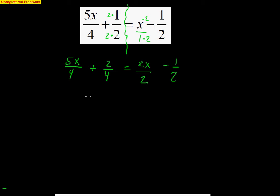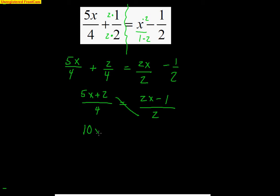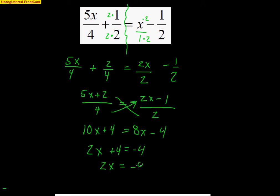Adding the fractions with common denominators gives 5x plus 2 all over 4 on one side, and 2x minus 1 all over 2 on the other. Remember, when you add fractions with common denominators, the denominator stays the same — you don't add the 4s together. Now I cross-multiply: 2 times (5x plus 2) gives 10x plus 4, and 4 times (2x minus 1) gives 8x minus 4. Subtracting 8x gives 2x plus 4 equals negative 4. Subtracting 4 gives 2x equals negative 8, and dividing by 2 gives x equals negative 4. I'm not showing every tiny step since you should be advanced enough.